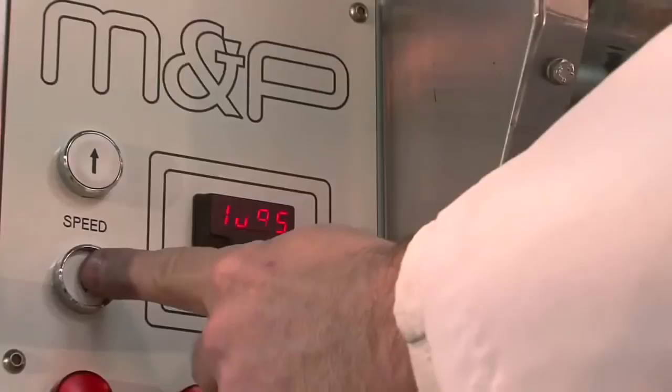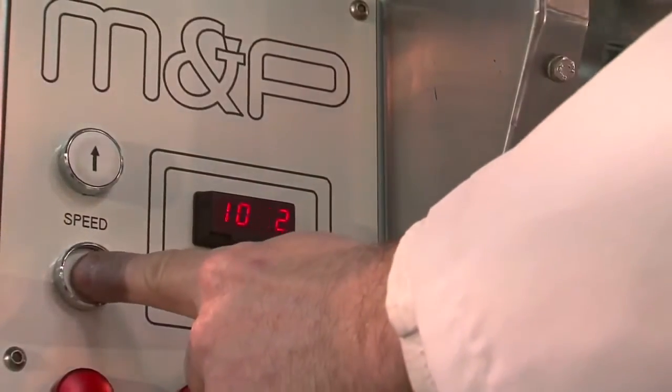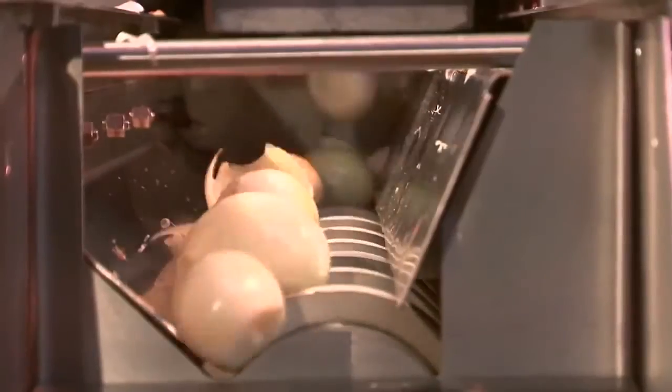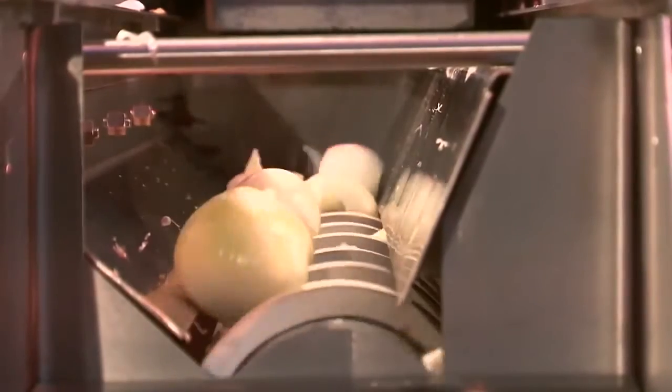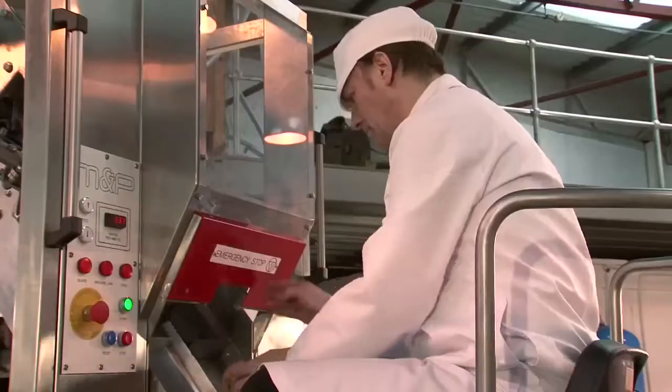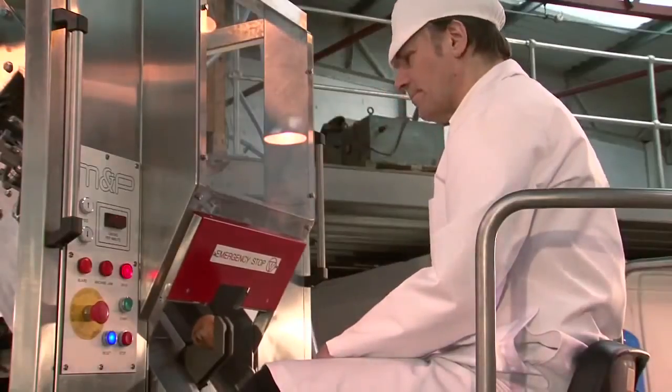The machine has a variable speed control that the feed operator can control from their working position as well as a digital display to monitor quantity output per minute. This machine can output up to 110 onions per minute. There is also an emergency stop close to hand along with the operator control station.